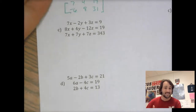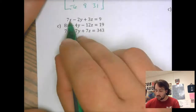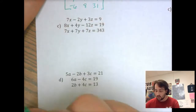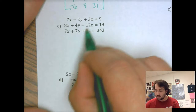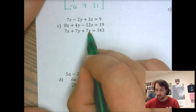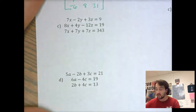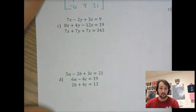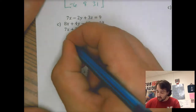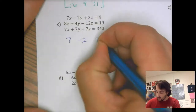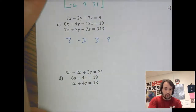We can do matrices of any size. Notice here we have three variables and three equations. All of the x's are together, all of the y's are together, all of the z's are together, and all of the numbers are together on the equals side. That's really the first thing I look for. If we have all of that in good order, then I just write my matrix exactly as I see it.